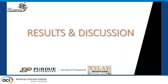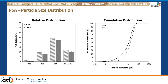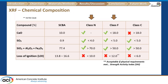For results: the particle size distribution showed that the ash is a coarser material compared to ordinary Portland cement. In terms of chemical composition using XRF, we compared results against ASTM C618 standards, which list three classes — N, F, and C — with minimum or maximum requirements. We met the requirements for Class N and F; however, we did not meet Class C with respect to calcium oxide content. For loss on ignition, we did not meet any class requirement, though we were relatively close to Class N and F.